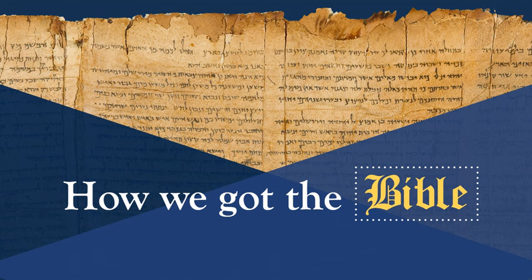Looking at how translations handle this: the ESV, the NASB, the NET, the NAB, and the NJB all translate it as "grasped," as if it's something you don't have. Whereas the NLT, the NIV, the GNT, the CSB, and the NRSV translate it as "exploit," as in something that you do have. As far as I know, there's no way to preserve that Greek word's ambiguity in English, so translators simply have to make a decision — whichever one they think is better — and that becomes the translation.